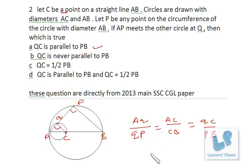So this is the concept of similar triangles. We are sure that QC is parallel to PB, but we cannot say that QC is half of PB. I hope you are clear.